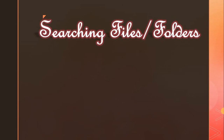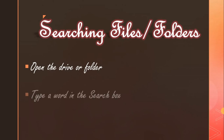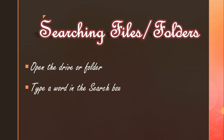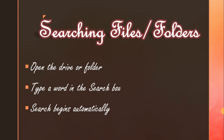Next, searching files or folders. You can search a file or folder by its name, extension, or a part of the name. To search, first open the drive or folder where you want to search, then type a word or part of a word in the search box. The search will begin automatically and the contents related to the word will be displayed.